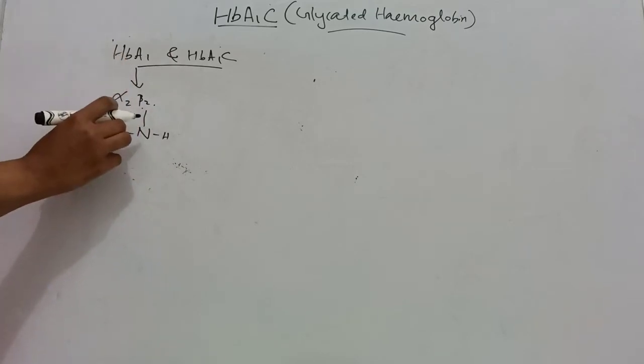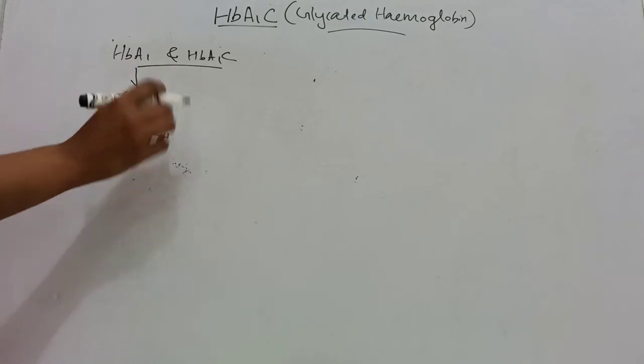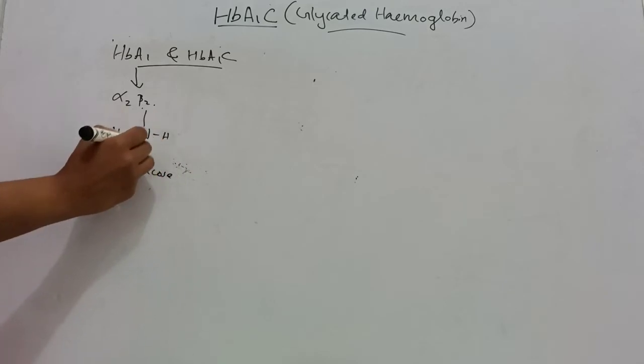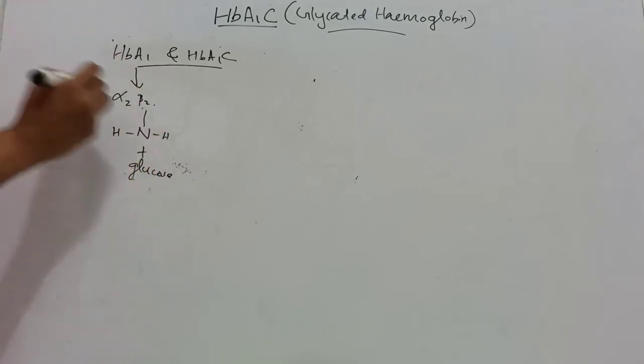When glucose is attached to the N-terminal valine of the beta chain of HbA1, HbA1c is formed. When the glucose is attached to the valine of the N-terminal end of HbA1, that is known as HbA1c.